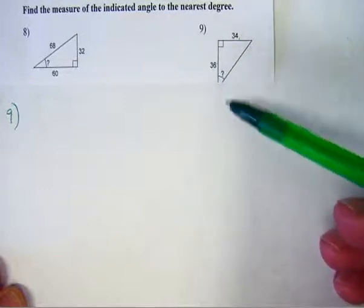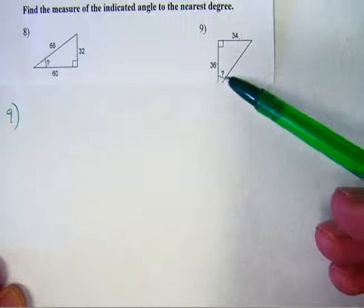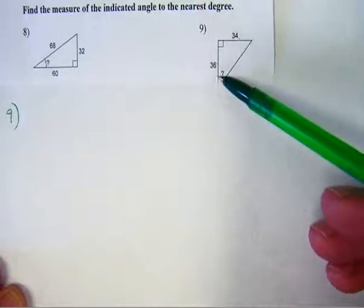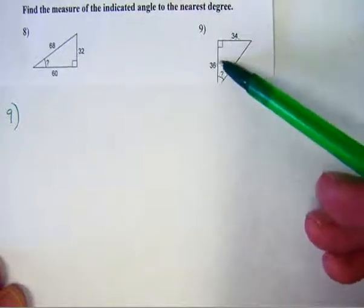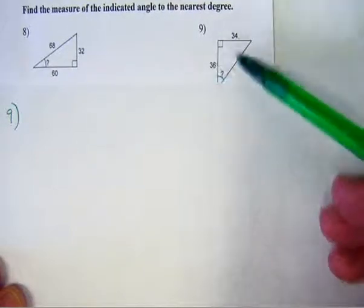I do not know the hypotenuse. So whatever trig function I pick, that trig function needs to only contain theta, the opposite, and the adjacent, because that's all I know.